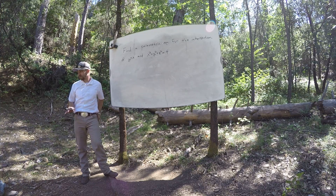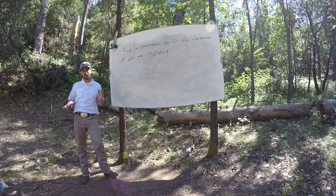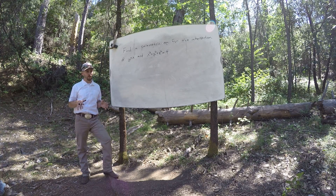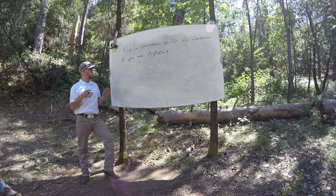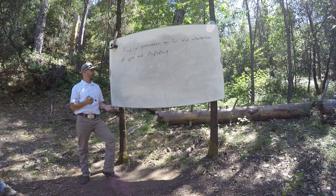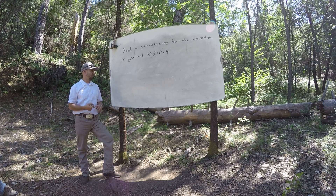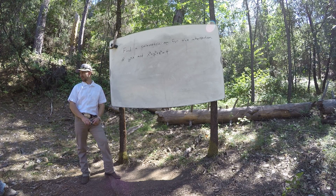Okay, so this should hopefully be really easy. I want to find a parametric equation for the intersection of the thing y equals x and the thing x squared plus y squared plus z squared is 4.